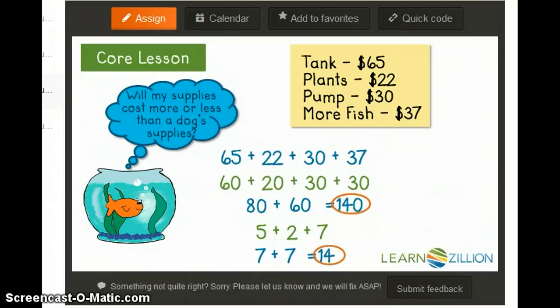140 and 14 are partial sums. So I will add 140 plus 14 together to get 154. The total cost of the fish supplies is $154.